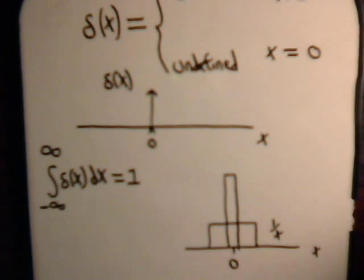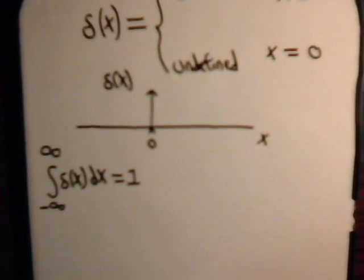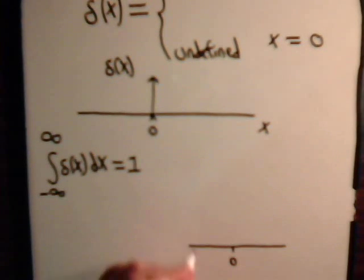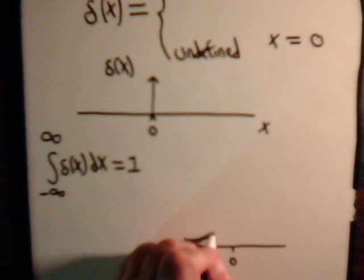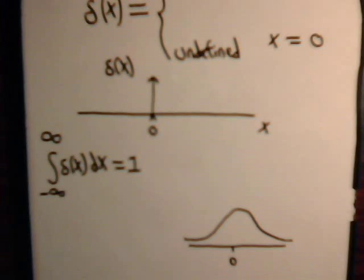And other textbooks, if you try to provide an example or what could be approximations of a Dirac delta function, they will also use Gaussian curves. That are like this.